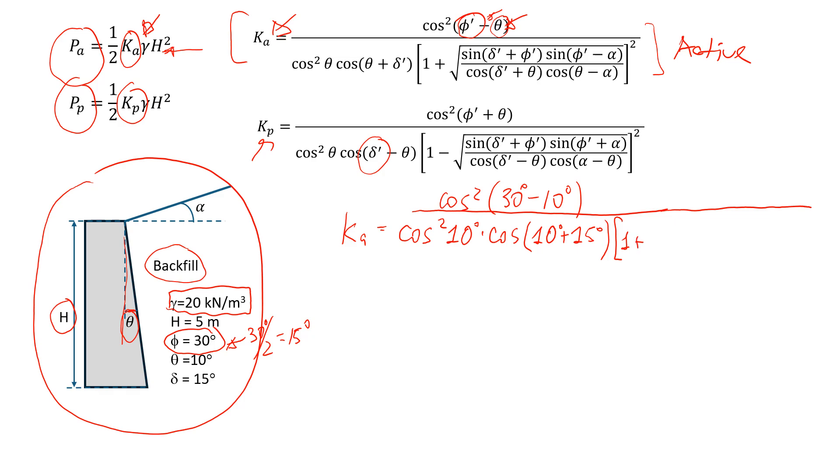and we have a square root of sine. Here the friction angle between the soil and the wall, it's 15 degrees plus the friction angle of the soil, which is 30 degrees, times sine, where we have friction angle of soil, 30 minus alpha.